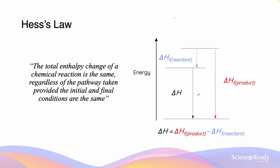For example, the energy change between the reactants and products of a reaction, described by delta H, is equal regardless of the pathway — whether it's via a two-step reaction indicated by the combination of the blue and black arrows, or a single-step pathway indicated by the red arrow — as long as the reaction conditions and states are the same before and after.